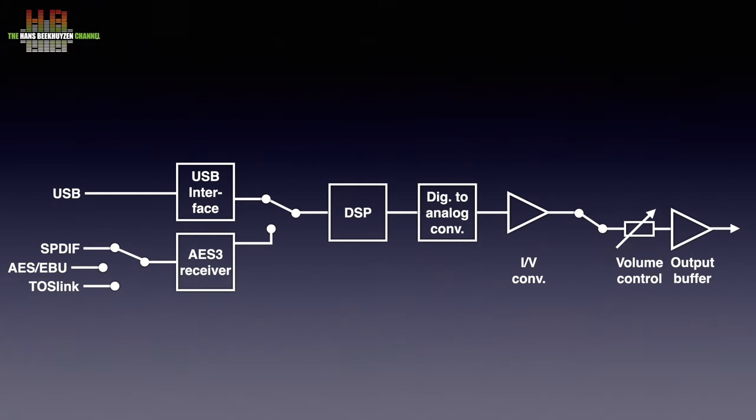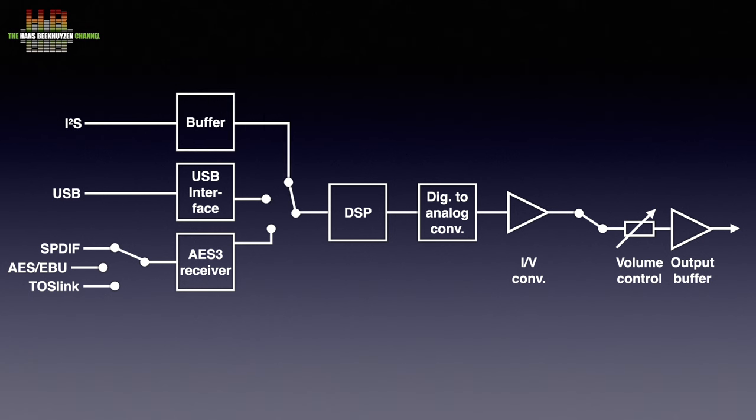Nevertheless, if you intend to use I2S over RJ45 or HDMI, make sure you buy your equipment from a company that offers good support. And just to be clear: you can't connect I2S over RJ45 to a network, and you can't connect I2S over HDMI to a normal HDMI input or output on your TV or AV receiver. When we look at our block diagram, you see that I2S only needs to be buffered and/or galvanically separated, and the I2S signal can then simply be selected as input on the digital signal processor.